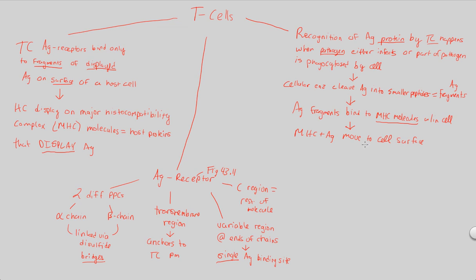We're going to take this MHC molecule plus the attached antigen and move it to the cell surface, because that's how a T-cell can recognize things — it notices when things on the surface are unusual. This MHC-antigen complex moved to the cell surface represents the idea of displaying: the antigen fragment that was phagocytosed is displayed on the surface. The T-cell cannot figure out what's going on inside until something is shown to it on the outside.